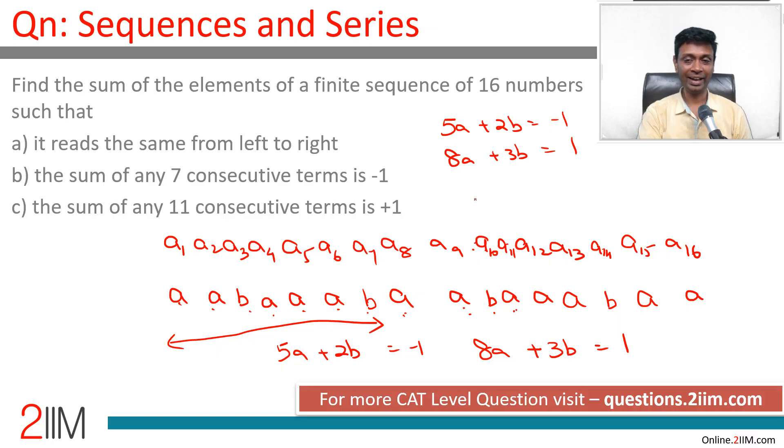With this we solve for this, we will get a and b. I am going to multiply this by 3. So we get 15a plus 6b is minus 3. Multiply this by 2, 16a plus 6b is 2. Subtract one from the other we get a is 5. 5 into 5, 25. 25 plus 2b is minus 1. 2b is minus 26. b is minus 13.